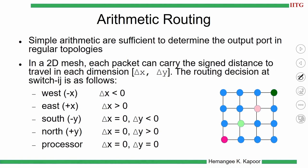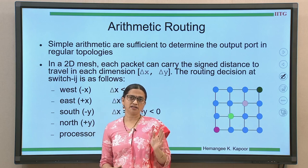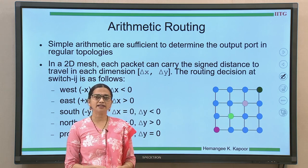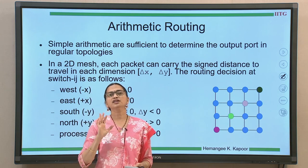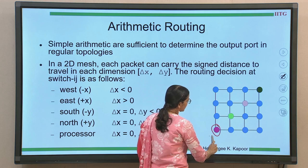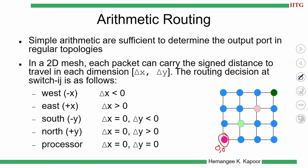The first is arithmetic routing. As the word says, it involves some simple math. When the packet moves out from the source, we know the source and the destination. We simply find out the difference of the x and y coordinates. Given a 2D mesh network, you find delta x and delta y assuming an origin at a given point. If I assume the origin to be at a certain node, that will be coordinate 0,0 and my delta x and y are decided accordingly.